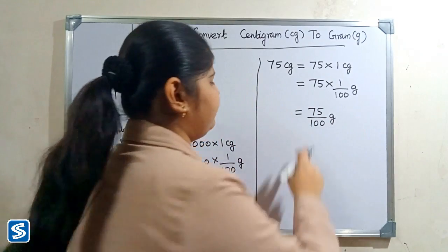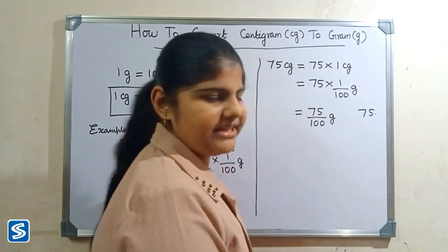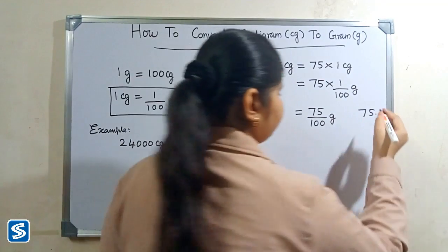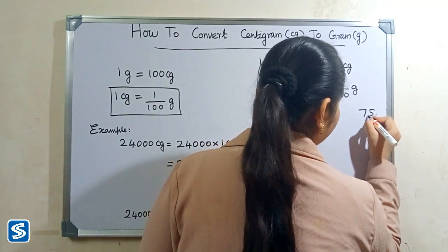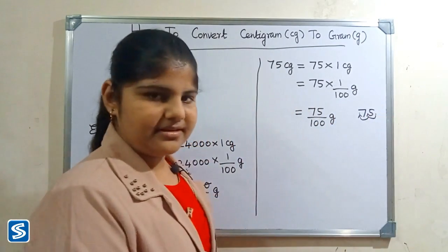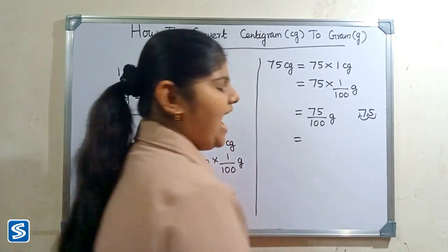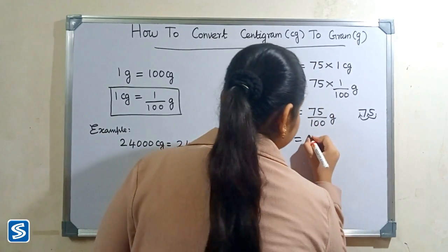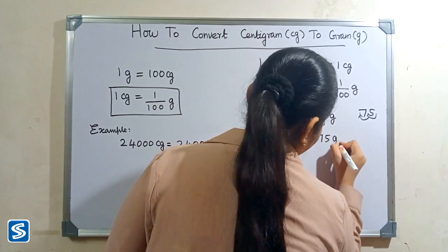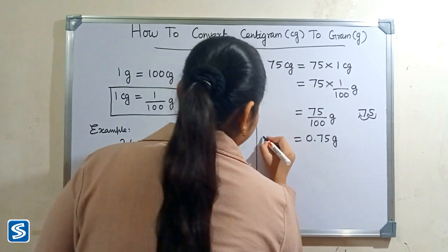The easy way to divide by 100 is to move the decimal point two places to the left. When we divide 75 by 100 grams, our answer will be 0.75 grams. So 75 centigrams is equal to 0.75 grams.